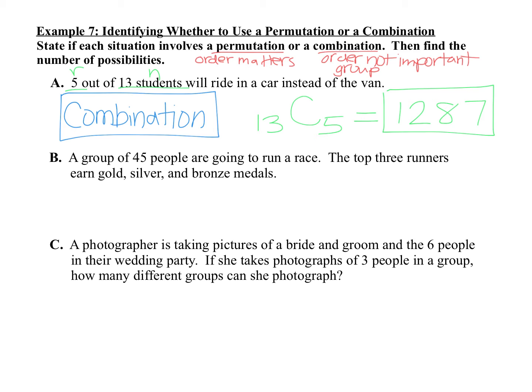Now let's look at situation B. We have a group of 45 people are going to run a race, and the top 3 runners earn gold, silver, and bronze. Gold, silver, and bronze are unique positions, so the order matters. And since the order matters, that makes it a permutation. Gold, silver, and bronze are unique positions. The order matters since each position is different.